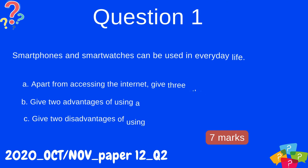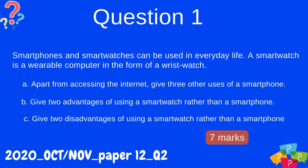Question 1: Smartphones and smartwatches can be used in everyday life. A smartwatch is a wearable computer in the form of a wristwatch. A: Apart from accessing the internet, give three other uses of a smartphone. B: Give two advantages of using a smartwatch rather than a smartphone. C: Give two disadvantages of using a smartwatch rather than a smartphone.